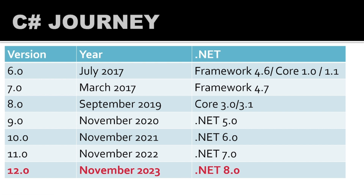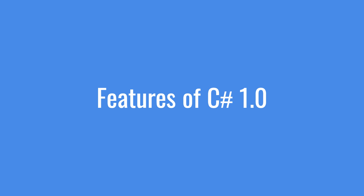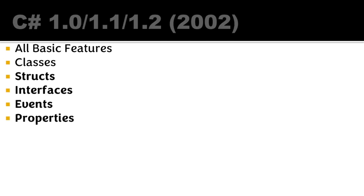Let's look at all the versions. In C# 1.0, the major features were all the basics: classes, structs, interfaces, events, properties, and delegates. These are all very common terms and you are likely aware of them, so let's move ahead to version 2.0.